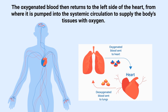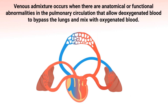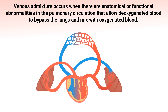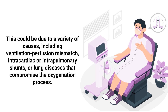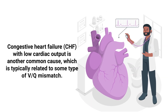Venous admixture occurs when there are anatomical or functional abnormalities in the pulmonary circulation that allow deoxygenated blood to bypass the lungs and mix with oxygenated blood. This could be due to a variety of causes, including ventilation-perfusion mismatch, intracardiac or intrapulmonary shunts, or lung diseases that compromise the oxygenation process.